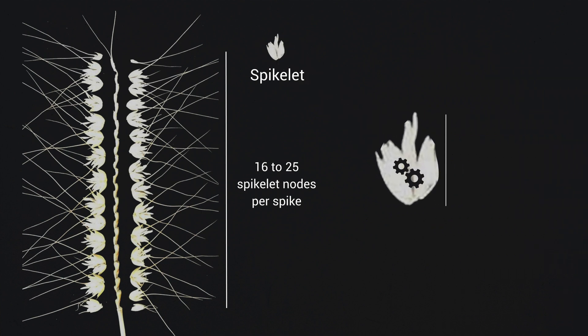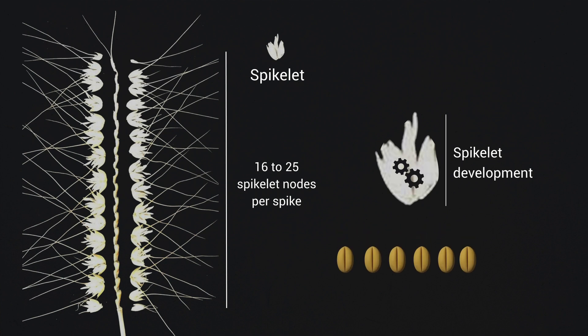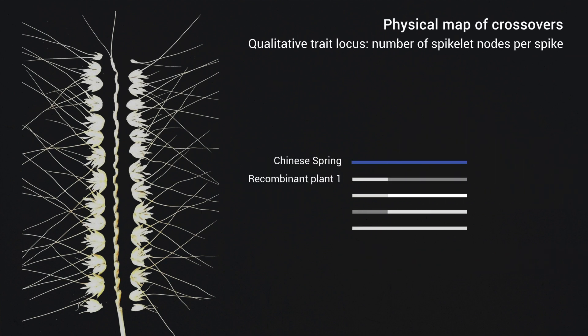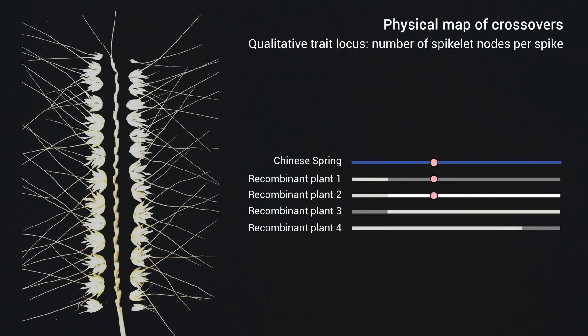Therefore, understanding the developmental pattern of spikelets within a spike provides the opportunity to increase grain number without decreasing average grain weight. In this paper, we report the map-based cloning of a quantitative trait locus for the number of spikelet nodes per spike in common wheat. The gene causing the quantitative trait locus is the wheat CoL5 gene.